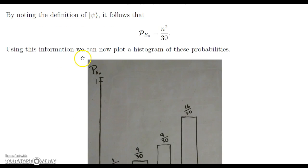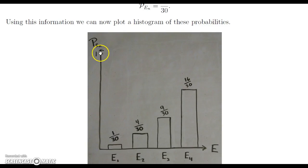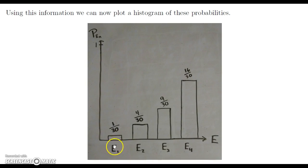Now using this information, we can quickly get the histogram that we want for these probabilities. And here we have the probabilities kind of just stacked on one another. We have 1 over 30, 4 over 30, 9 over 30, and 16 over 30.